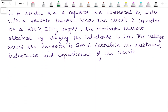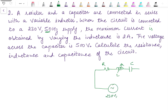The second problem says: a resistor and a capacitor are connected in series with a variable inductor. When the circuit is connected to a 230 volt, 50 hertz supply, the maximum current obtained by varying the inductance is 2 ampere. Since maximum current occurs at resonance, 50 hertz is the resonant frequency. The voltage across the capacitor is 500 volts. Calculate the resistance, inductance, and capacitance of the circuit.